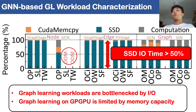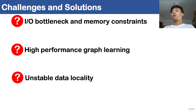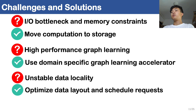Moreover, we can see that memory capacity limits the ability of GPGPU when input graphs are huge. For example, the size of the TW dataset used in the benchmark is over 100 GB. To achieve high-efficiency graph learning, in addition to the I/O bottleneck and memory capacity constraints, how to achieve high-performance graph learning and how to exploit data locality in graph learning workloads are challenges we have to face. We can move computation to a domain-specific accelerator in SSD to address the first two problems. In terms of data locality exploitation, we can optimize the graph data layout and schedule the incoming graph learning requests.